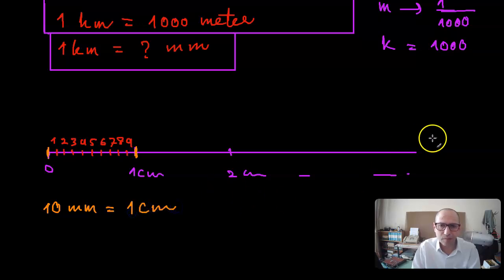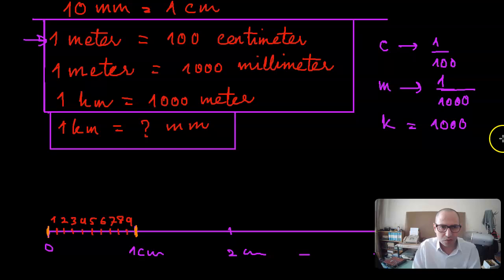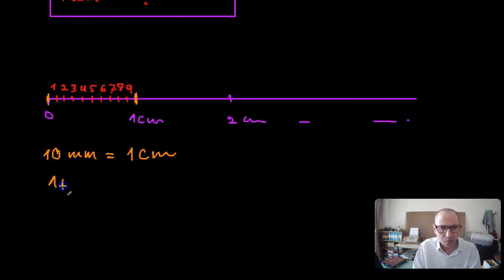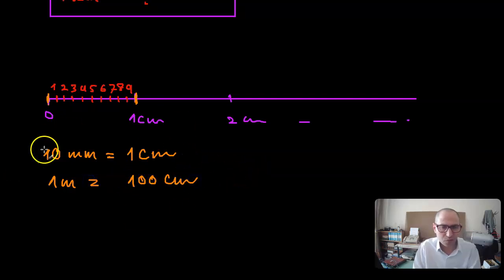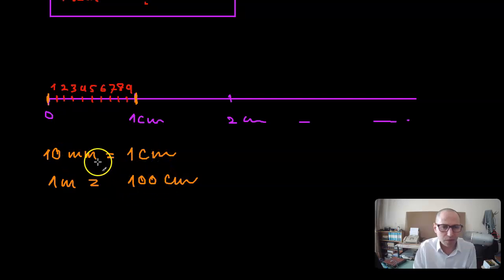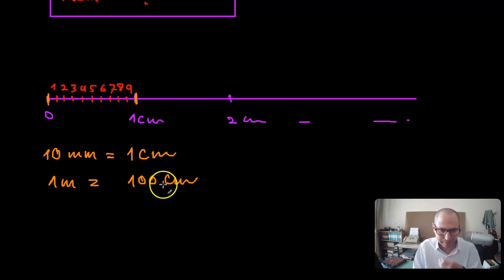Ten millimeters is the same thing as one centimeter. From the previous video we also know that one meter is the same thing as a hundred centimeters. So if one centimeter is ten millimeters, then a hundred centimeters — which is a hundred times that — would be a hundred times ten, which is a thousand millimeters.